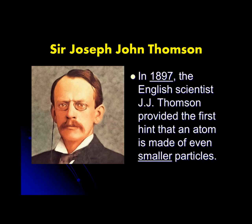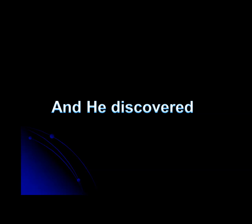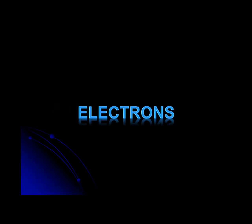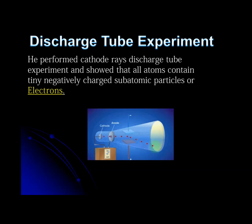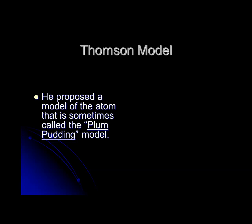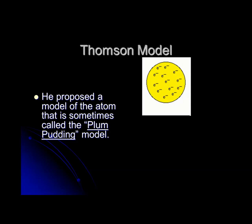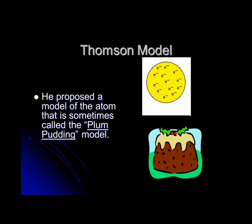Then came Sir Joseph John Thomson, also known as J.J. Thomson. In 1897, this English scientist provided the first hint that an atom is made up of even smaller particles. He said the atom can be further divided, and he discovered electrons. He performed the discharge tube experiment and showed that all atoms contain tiny negatively charged subatomic particles called electrons. He proposed a model of an atom sometimes called the plum pudding model, because in this model electrons are embedded in the atom just like plums in a pudding.